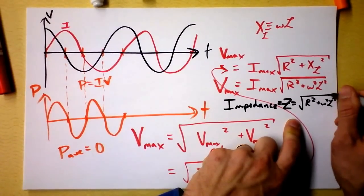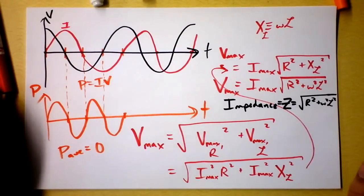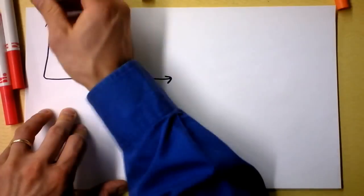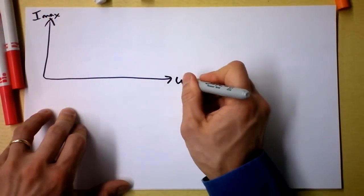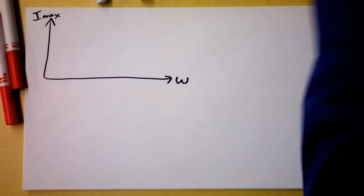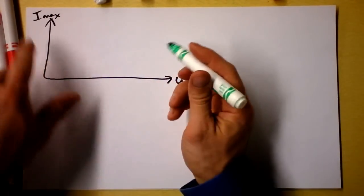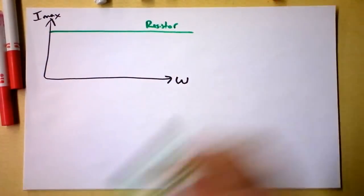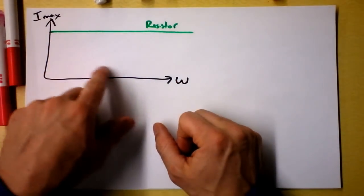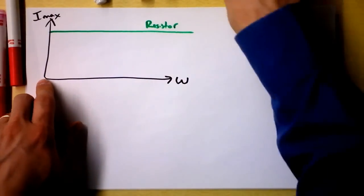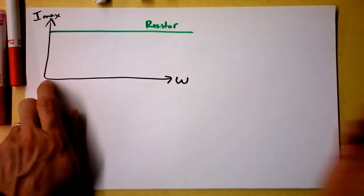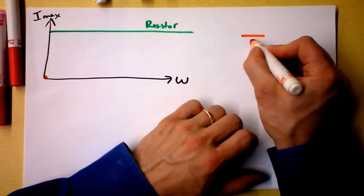Now I want to add a capacitor to the resistor and inductor, but first let's think about how to get maximum current. I'll make a graph of current as a function of omega — the driving frequency. The current through a resistor is completely independent of frequency, so it's a flat line. For a capacitor: at zero frequency (DC), there will ultimately be no current through the capacitor.